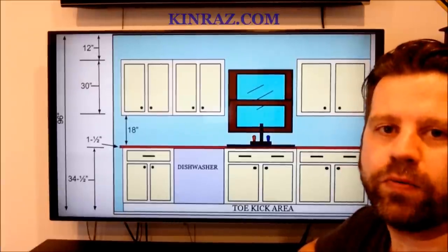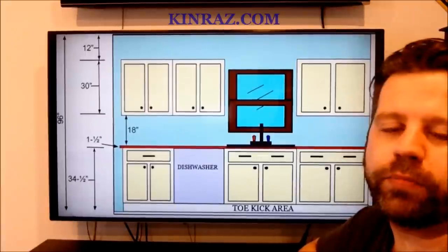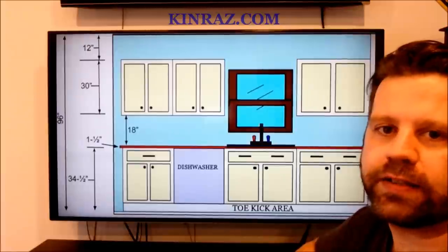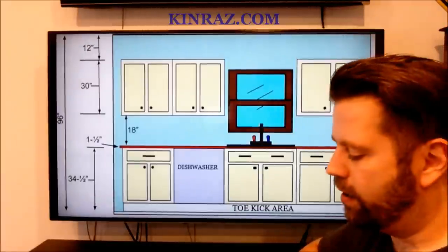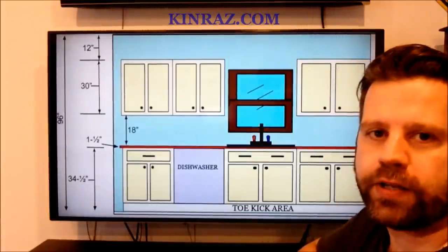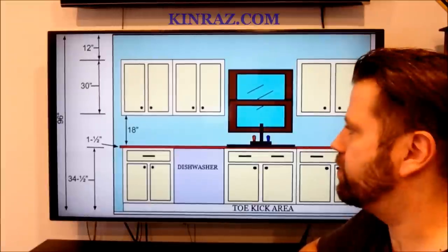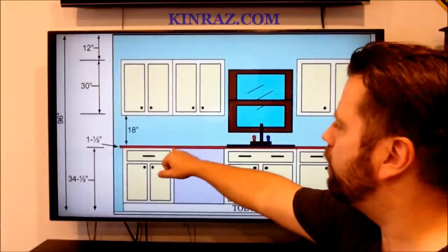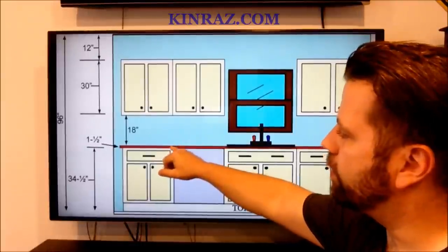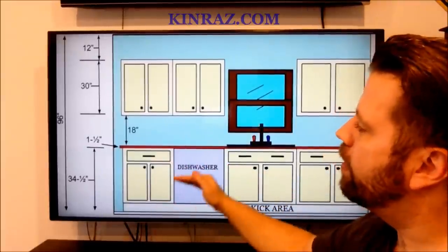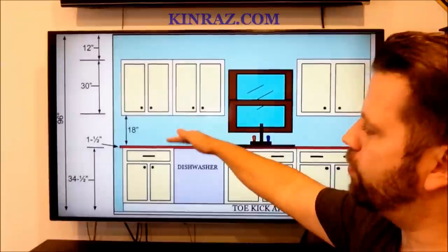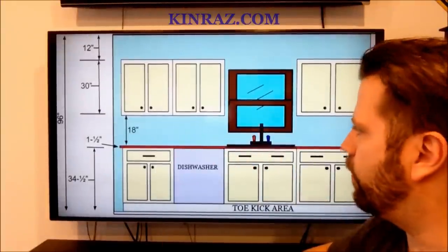Some of the tops that will vary from that are stone tops. Usually those thicknesses are rated in centimeters. Three centimeters is one and a quarter inches thick, two centimeters is three quarter inches thick. So that can change the thickness, but in general terms your countertop finishes out at 36 inches above the finished floor.